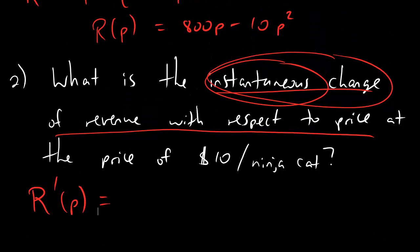Finding the derivative of revenue is easy enough. 800p just becomes 800, minus 10p squared, well the p squared becomes 2p, and we keep the minus 10, and if we simplify that, it's 800 minus 20p.